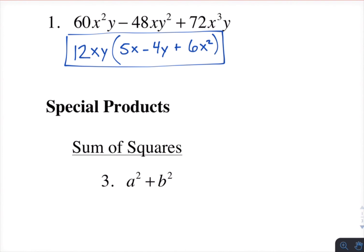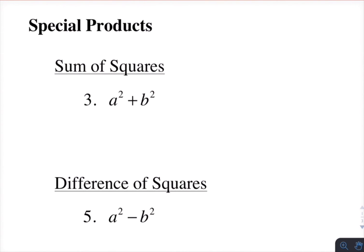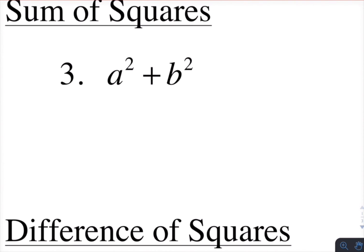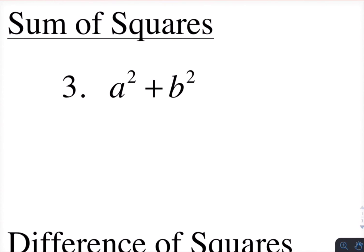Okay, so that takes care of GCF. Now let's talk about special products. They're called special products because these things are the results of multiplying certain things together. So a squared plus b squared, it's called the sum of squares. It is always prime.